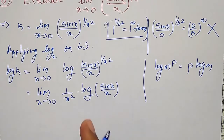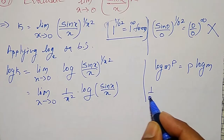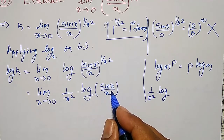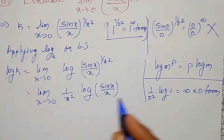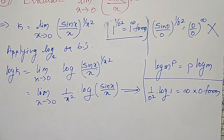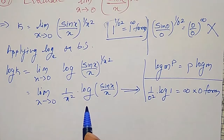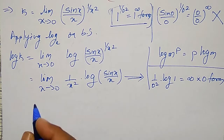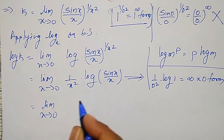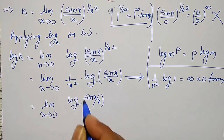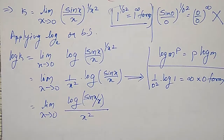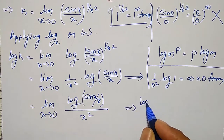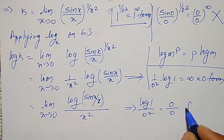Checking the indeterminate form: putting x equal to zero gives (1/0²) into log(sin x / x). As x tends to zero, sin x / x is 1, so log of 1 is zero, giving us infinity into zero form. We cannot apply L'Hôpital's rule directly in this form, so I convert it to 0/0 form by writing log(sin x / x) divided by x square, which gives 0 by 0 form.